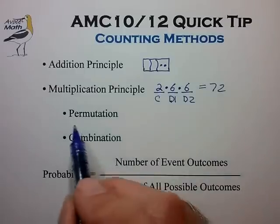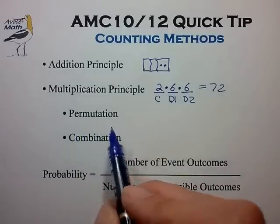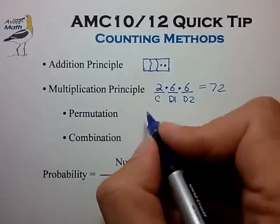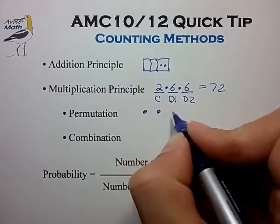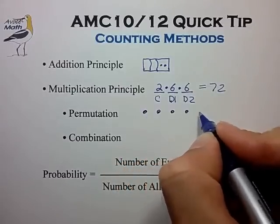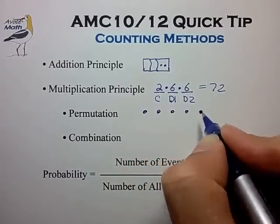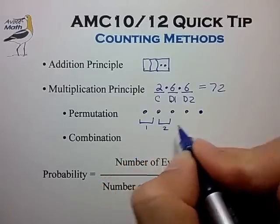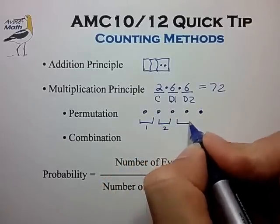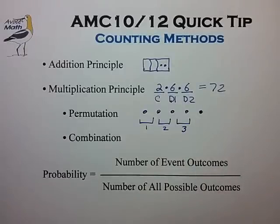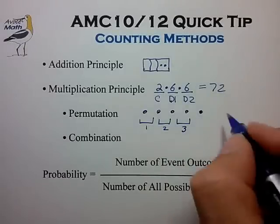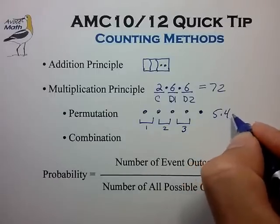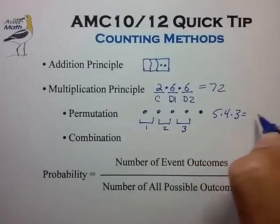A simple example of the permutation is selecting three runners from a set of five distinct runners and awarding the gold, silver, and bronze medals. The number of ways this can be done is easily calculated as 5 times 4 times 3, which is equal to 60.